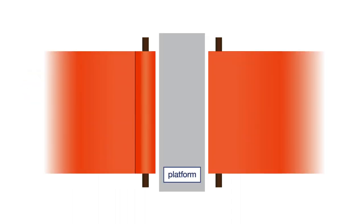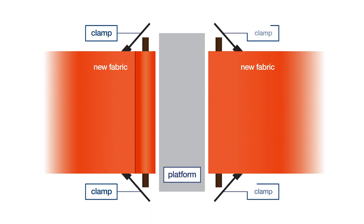Start with the old fabric already removed and the new one in place. Secure both ends of the fabric to the machine framework using clamps to prevent it falling into the basement.